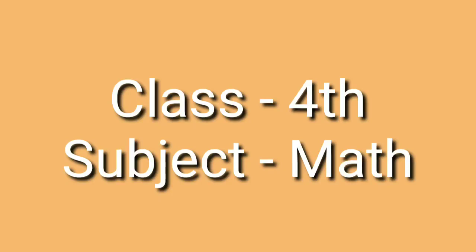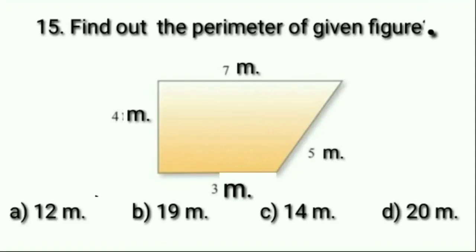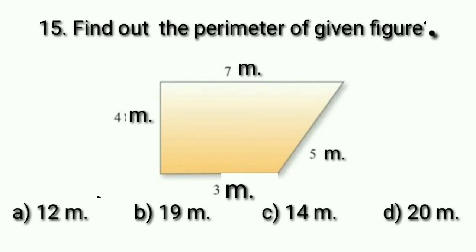Good morning dear students. Today we will solve question number 15 to 20 of practice sheet 1. Question number 15 is: find out the perimeter of the given figure. We are given a figure with the length of all sides provided, and we have to find its perimeter. To find the perimeter, the length of all sides is added.